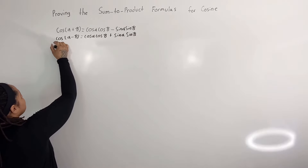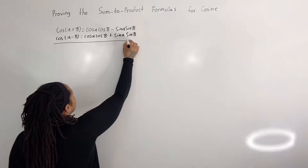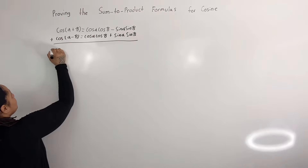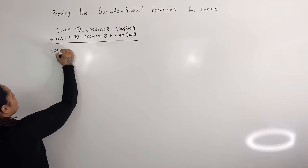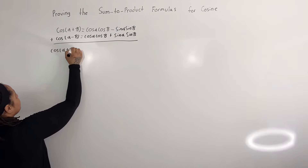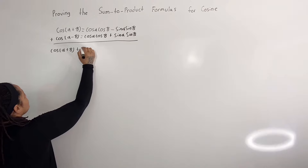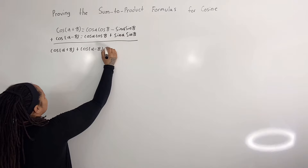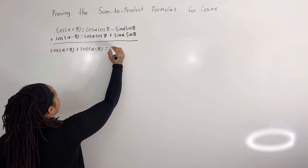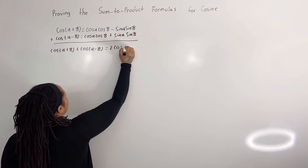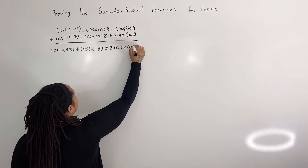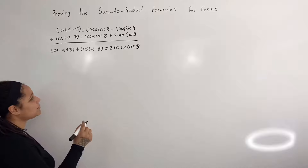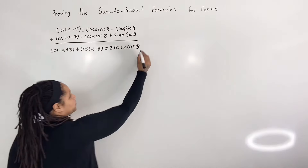Now what I'm going to do is add these two equations together, and that's going to give me: cosine of alpha plus beta plus cosine of alpha minus beta is equal to two cosine of alpha cosine of beta. I'm going to call this equation one.